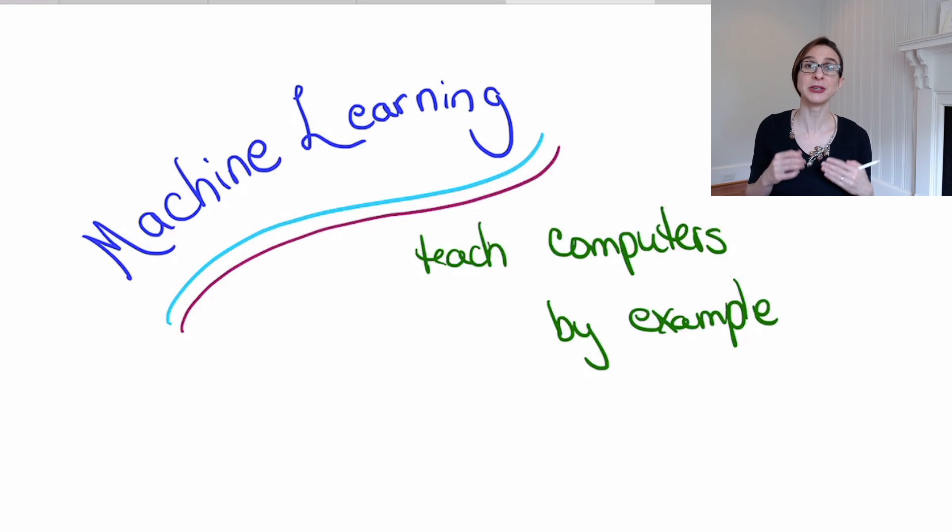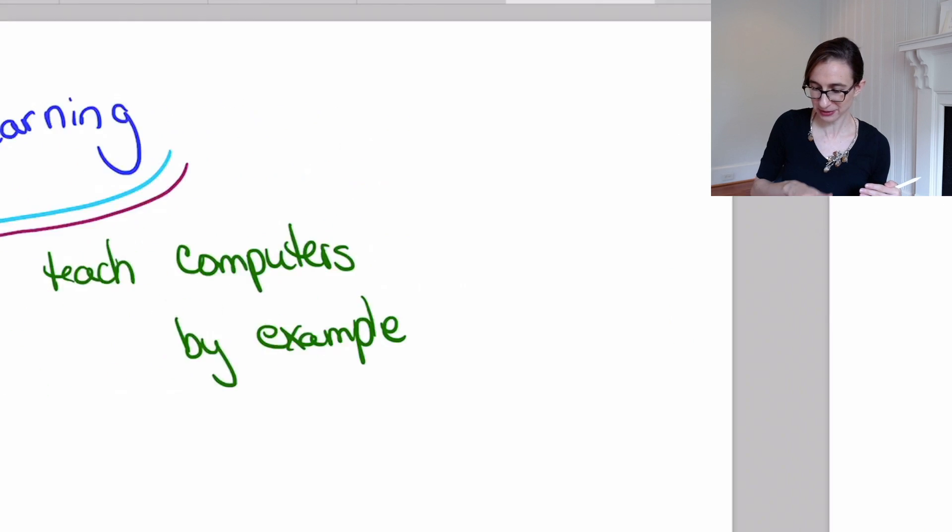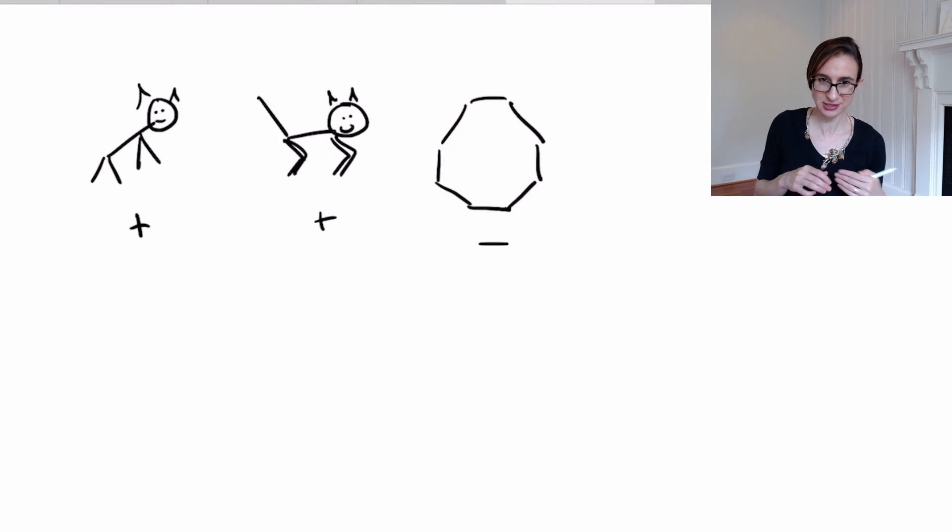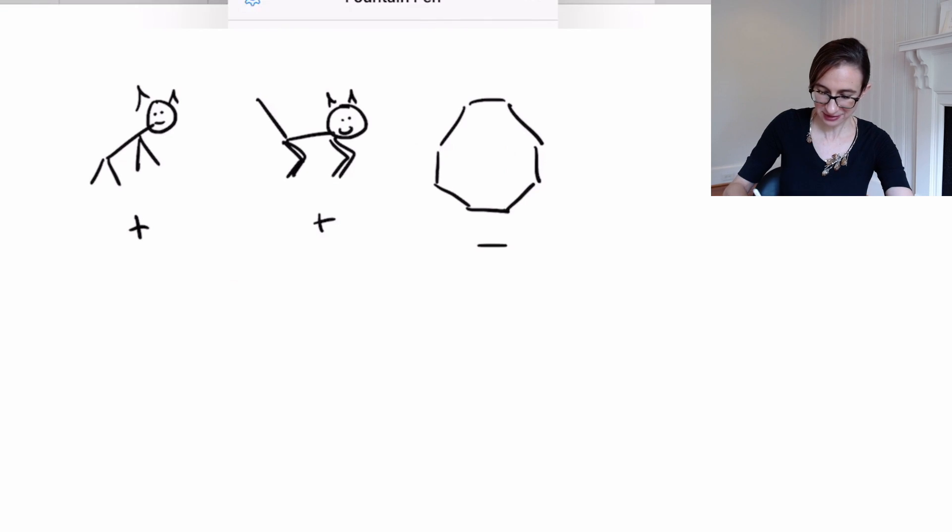So let's say we create a labeled training set. We have a dataset where we have a whole bunch of images, and some of them are deer and some of them are not deer. And each image is labeled as to whether or not there's a deer in the image.